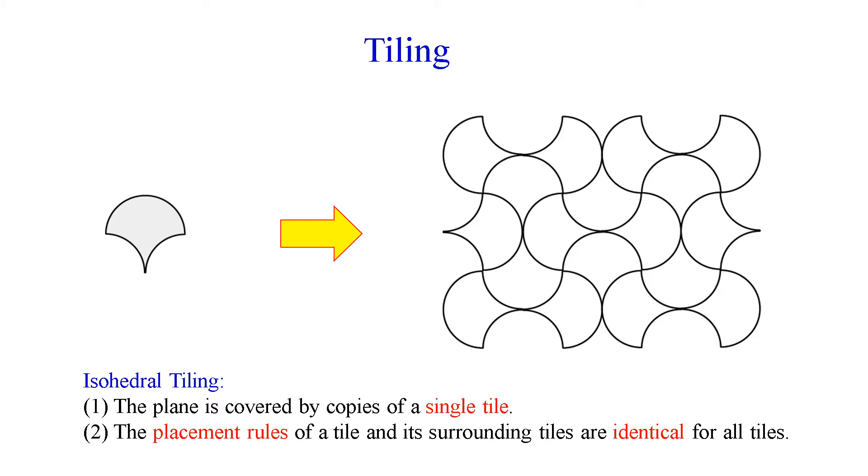In this talk, we restrict to a subclass of tiling called isohedral tiling, in which the plane is covered by copies of a single tile, and the placement rules of a tile and its surrounding tiles are identical for all tiles. The isohedral tiling is well studied.